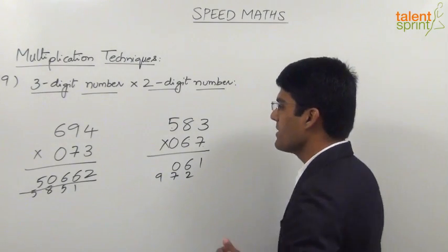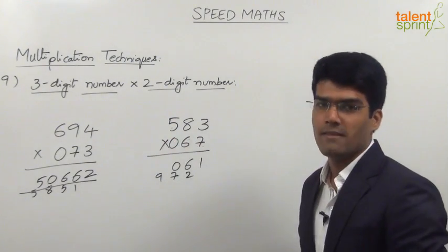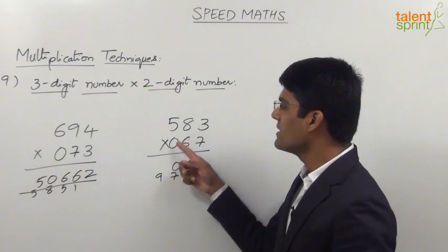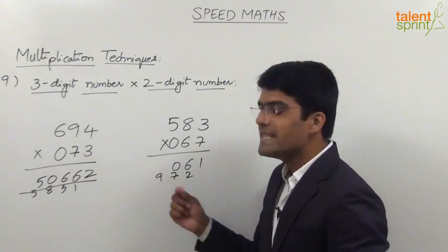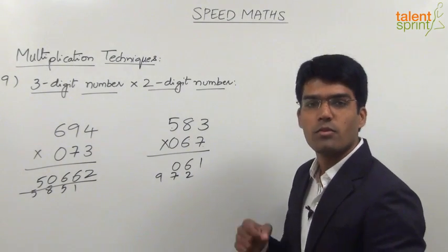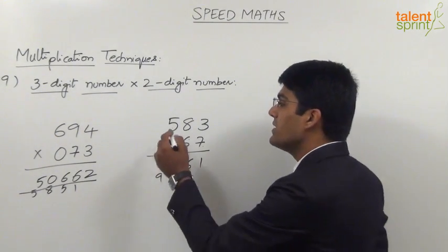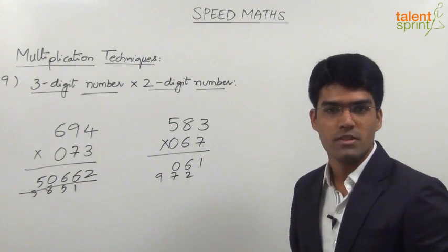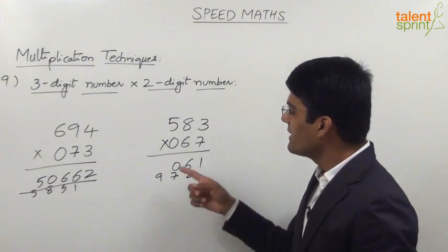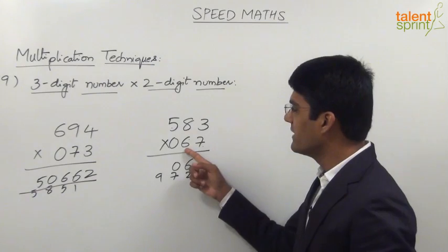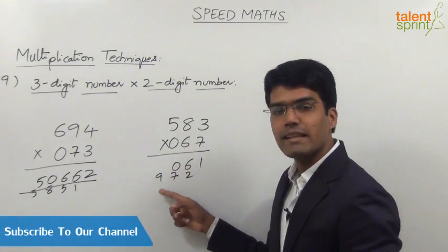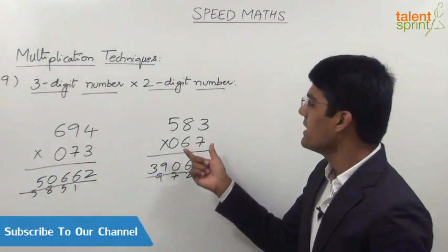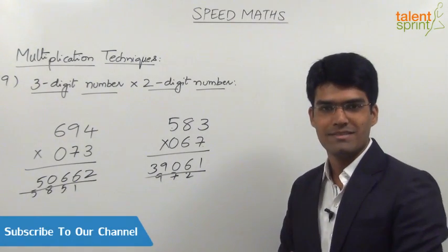The fourth step is cross multiplication of tens with hundreds: 5 × 6 = 30 and 8 × 0 = 0, so 30 + 0 = 30. With the carry of 9, 30 + 9 = 39. We understand there will be no fifth step since multiplication of hundreds places will give 0. So in the fourth step itself we stop. The answer for 583 × 67 is 39,061.